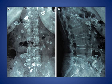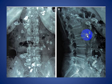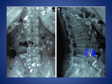Here, there is extensive calcification in the abdomen, and this is due to cystic cysticercosis.